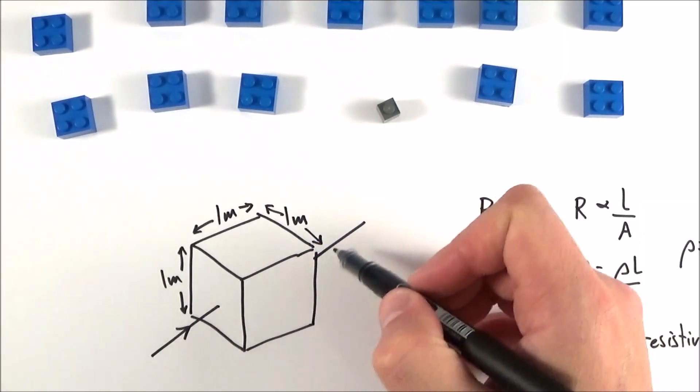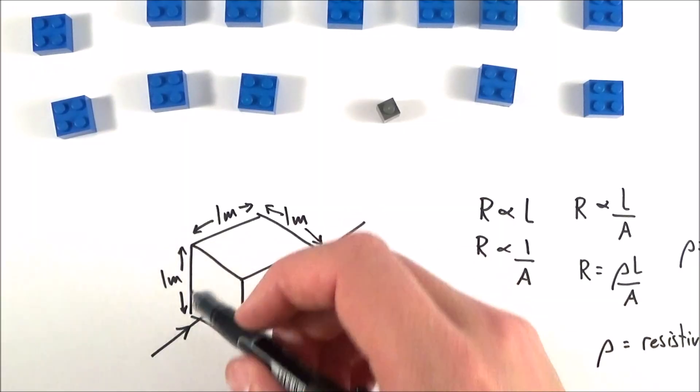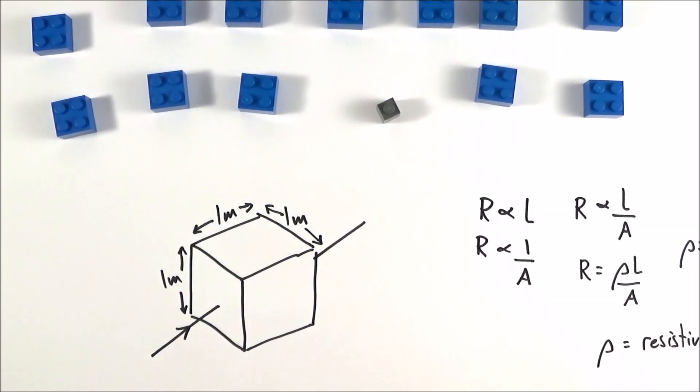Provided we have a current which flows through this block which has a length of one meter and an area of one meter, we can really think about the resistivity as the resistance of a cubic meter of a substance. It's going to vary from metal to metal and it will increase as temperature goes up.